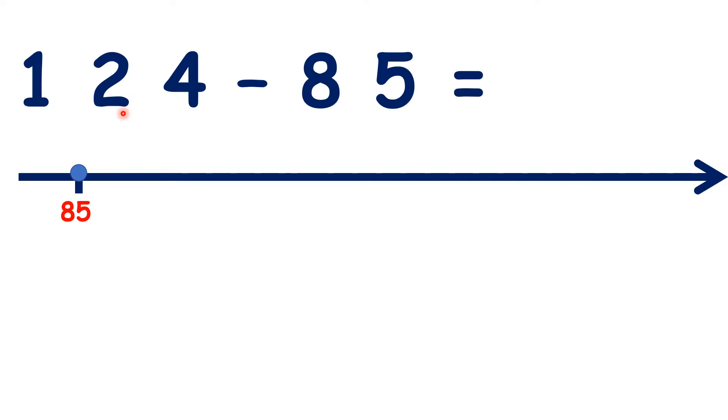We have 124 minus 85. So we can start on 85. Now let's start by targeting the 10. So the next multiple of 10 after 85 is 90, and 5 more gets us to 90.